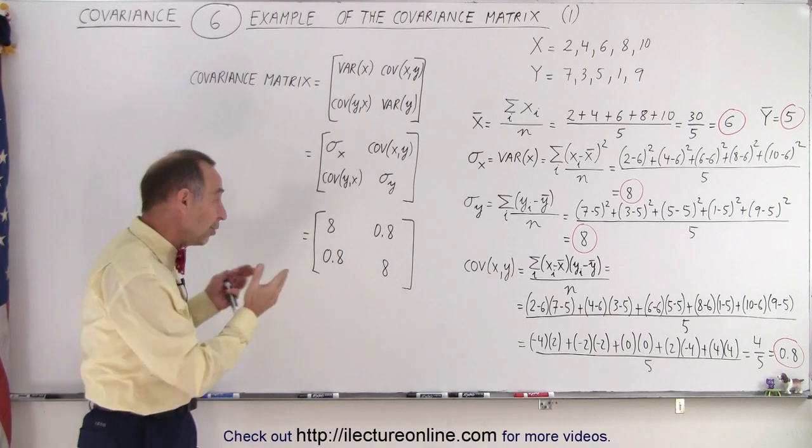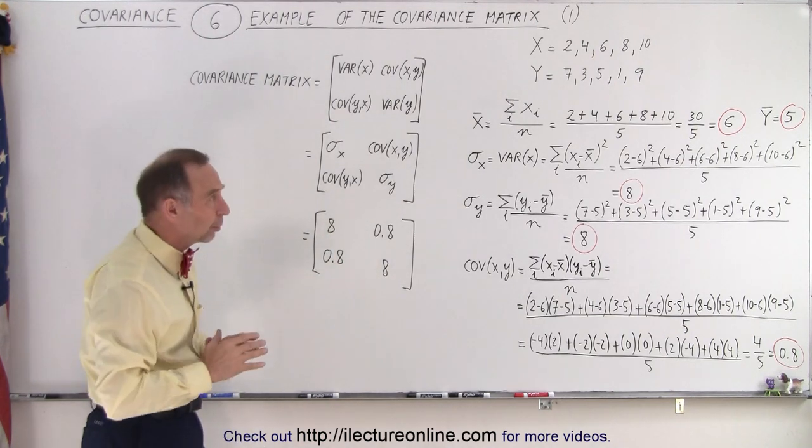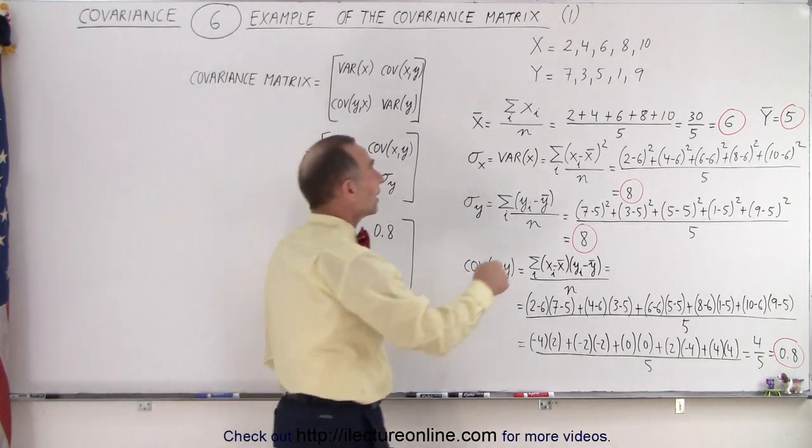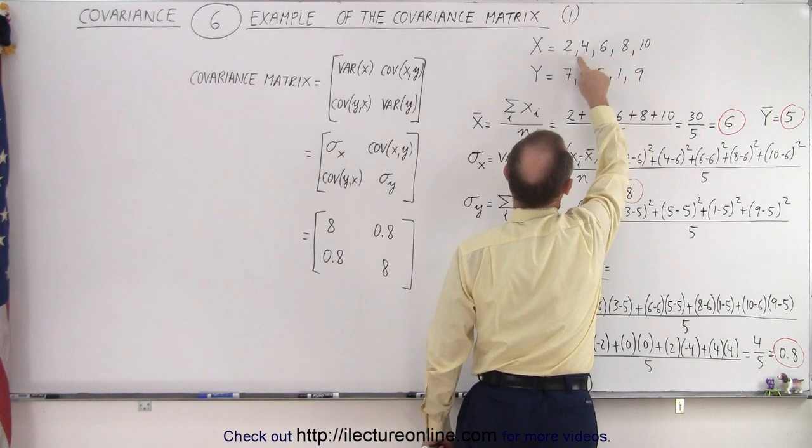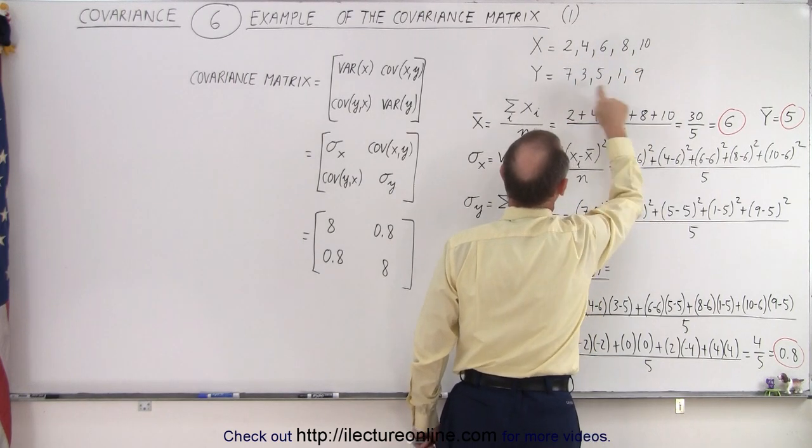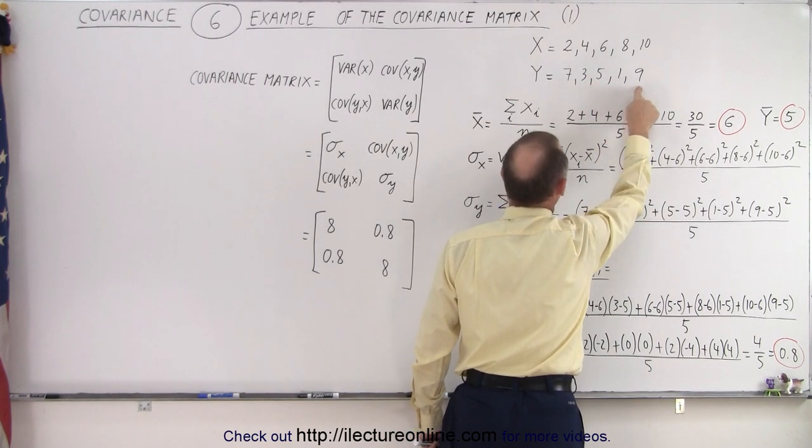Now what does that represent? Well, a number that's close to zero means there's not a lot of relationship between the two data sets. Notice that the X data set steadily increases from two all the way to ten by twos, but notice that the Y data set goes from a high to a low to a medium to low to high.